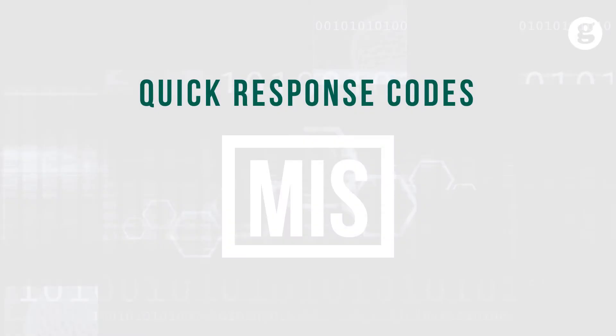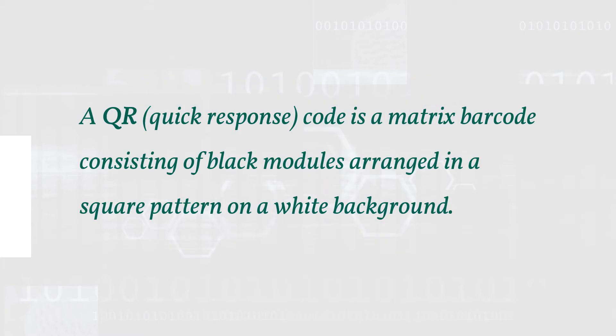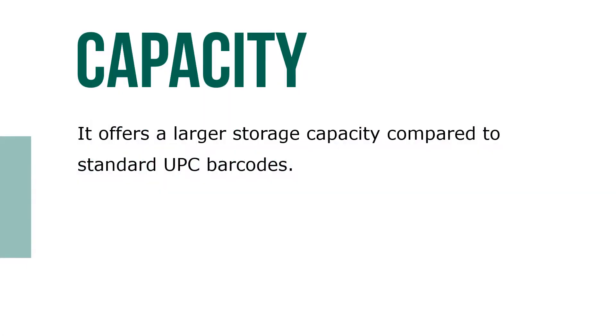Let's take a look at quick response codes. A QR quick response code is a matrix barcode consisting of black nodules arranged in a square pattern on a white background. It offers a larger storage capacity compared to standard UPC barcodes.